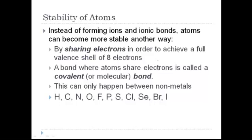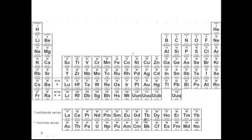Here's a list of all of the nonmetals that can participate in covalent bonds. Notice that hydrogen is on this list. Even though hydrogen is on the left-hand side of the periodic table, it is considered a nonmetal and makes covalent bonds. If you look at the periodic table, the elements that are going to participate in covalent bonding are over here on the right-hand side — I'm just going to circle them for you. These are the elements, and also hydrogen, that are involved in covalent bonding.